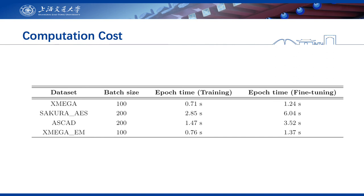Here is the computation cost of training and fine-tuning. The training time per epoch is mainly determined by the size of the training dataset, the batch size, and the length of the raw traces. We observe that the epoch time for fine-tuning is approximately 20% more than training. This is reasonable since more traces are processed and an additional MMD loss is calculated in the fine-tuning phase. The fine-tuning time is still affordable; for example, running the fine-tuning phase for 15 epochs can be completed within 2 minutes for all considered datasets.